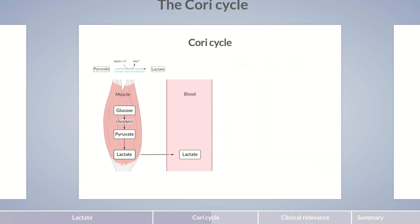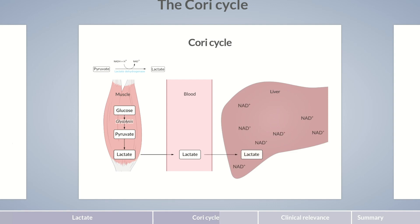If lactate isn't required as an energy source, it's degraded. This process occurs primarily in the liver. There's also an excess of NAD+ in the hepatocytes. The lactate resorbed from the blood can therefore be oxidized to pyruvate by lactate dehydrogenase in the liver and be used to form glucose. The biosynthesis of glucose is called gluconeogenesis. We'll be placing special focus on gluconeogenesis in the next two episodes of this course. So, as we can see, lactate has a second function in energy metabolism, namely as a precursor for gluconeogenesis.